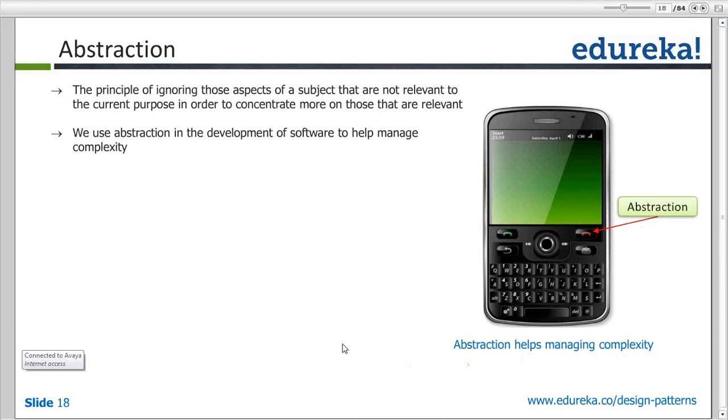Abstraction essentially is a principle of ignoring those aspects of a subject that are not relevant to the current purpose of the discussion, and that allows us to concentrate on what is relevant. We use abstraction in development to manage the complexity around a system, and managing complexity is one of the key skills. How do you manage it? One of the principles that you apply is that of abstraction.